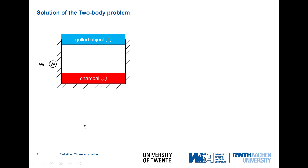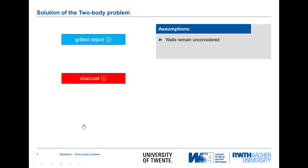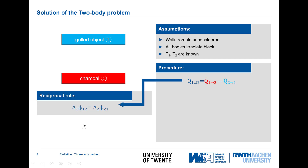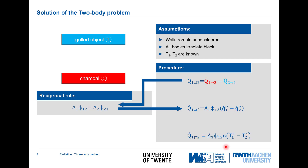Let's start with the simpler two-body problem. Assumptions: the wall goes away, all objects radiate black, and I know the temperatures. The procedure is: my radiative exchange q̇₁→₂ equals q̇₁→₂ minus q̇₂→₁. Using the reciprocal rule for the view factors, this gives a solution which is area times φ₁₂. As I'm dealing with black bodies, I have black body radiation from object 1 minus black body radiation from object 2, so I can put σ times temperature to the power of 4. It's possible just because I assume the objects radiate black.